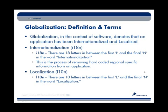Often when you see internationalization, you'll see it abbreviated as I18N. The reason is simple: there are 18 letters between the first I and the final N in the word internationalization.